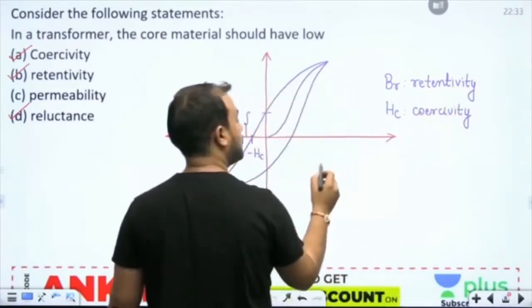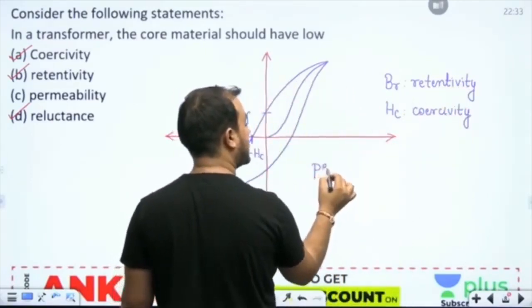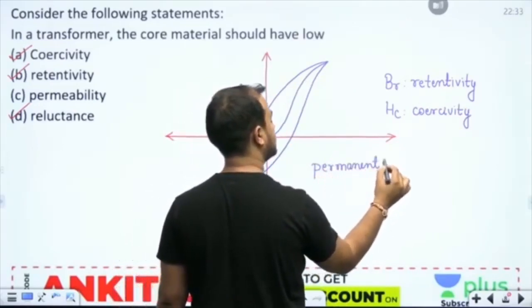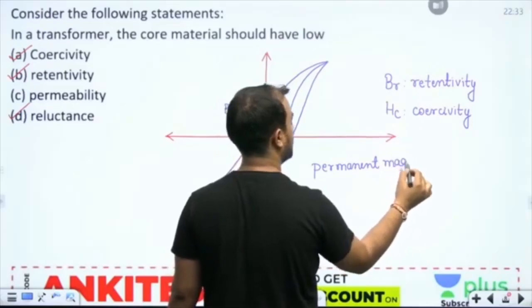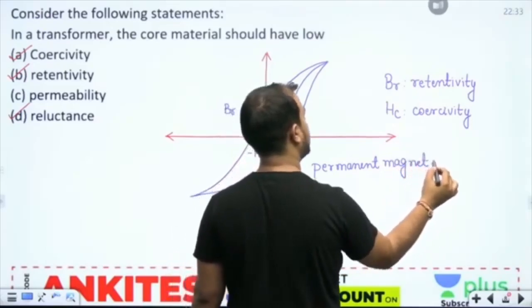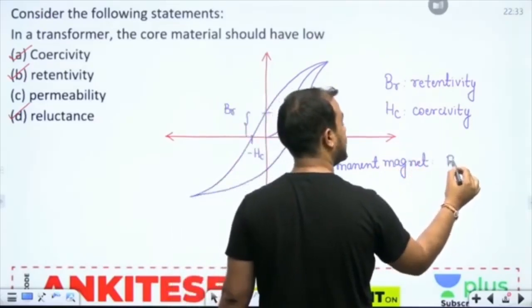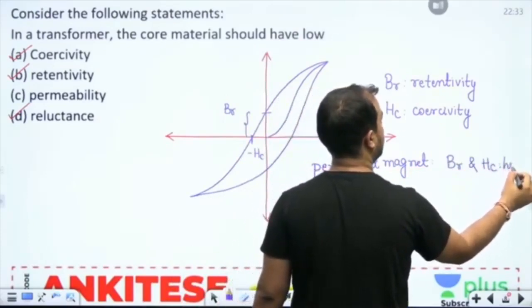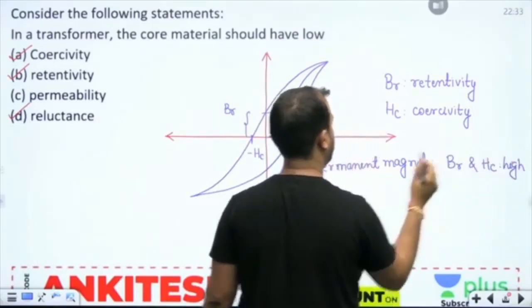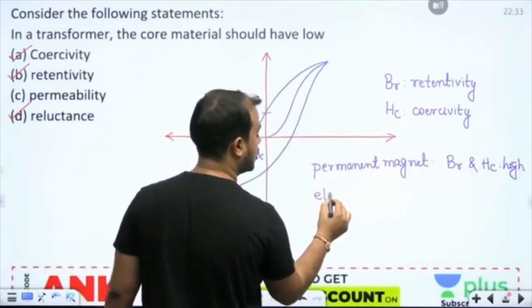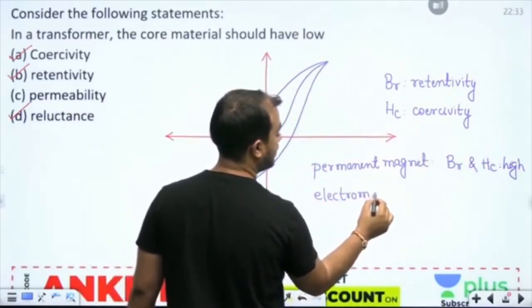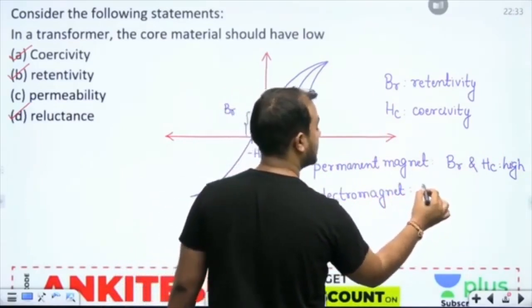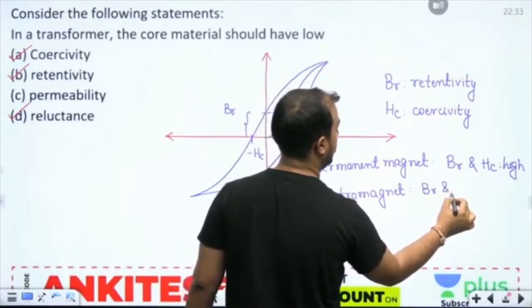Now, for a permanent magnet, these both must be high. These both must be as high as possible. But when we talk about an electromagnet, then these must be low.